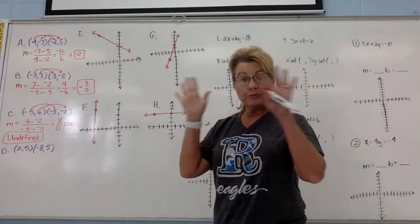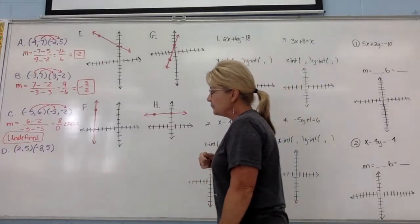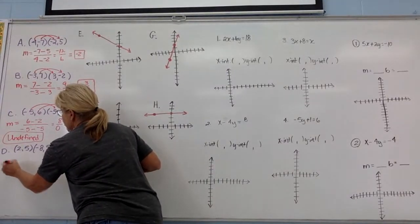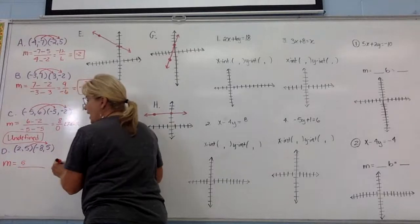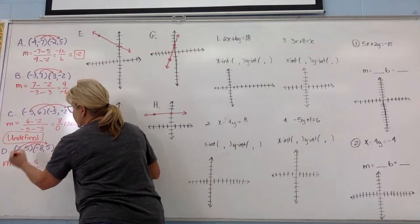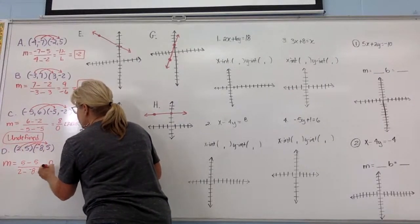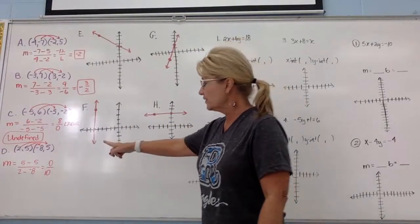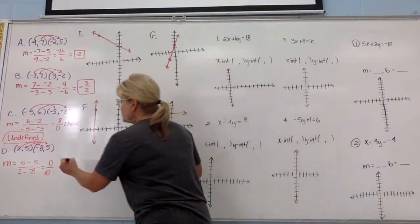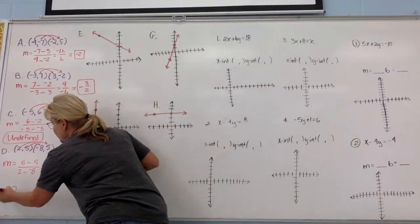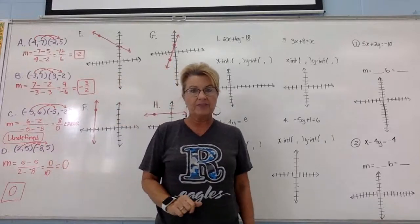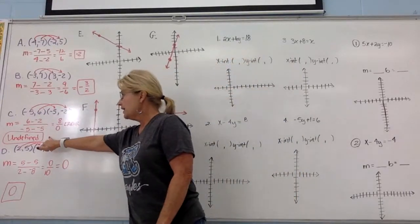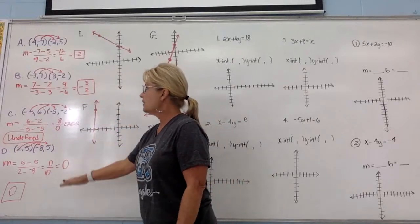For Example D: 5 minus 5 on top and 2 minus negative 8 on the bottom gives 0 over 10. Where the zero is located matters — zero on the top is different from zero on the bottom. Put this in your calculator and you get 0, not an error. These are the two special slopes: undefined slope and zero slope. They are the only two special circumstances in the linear world.